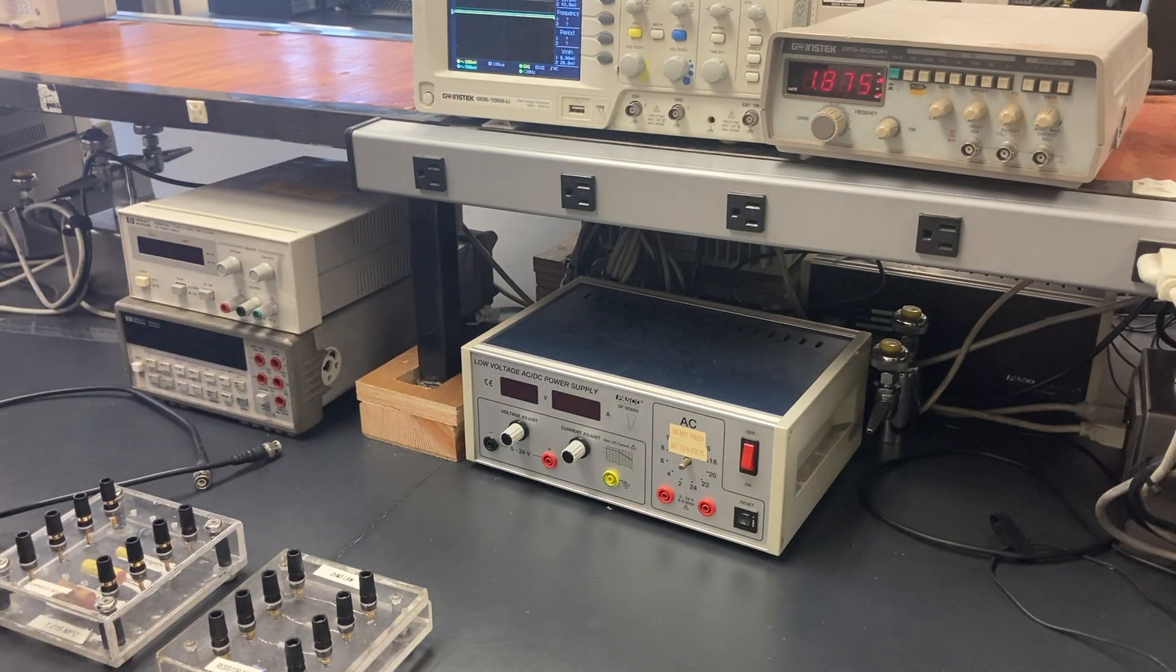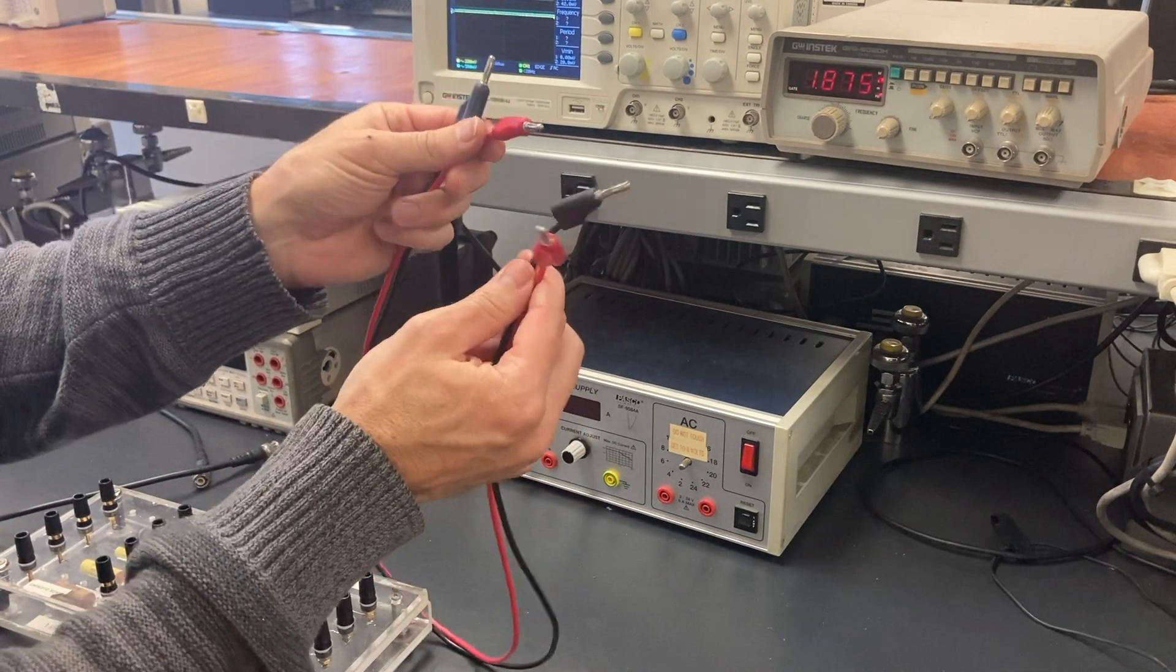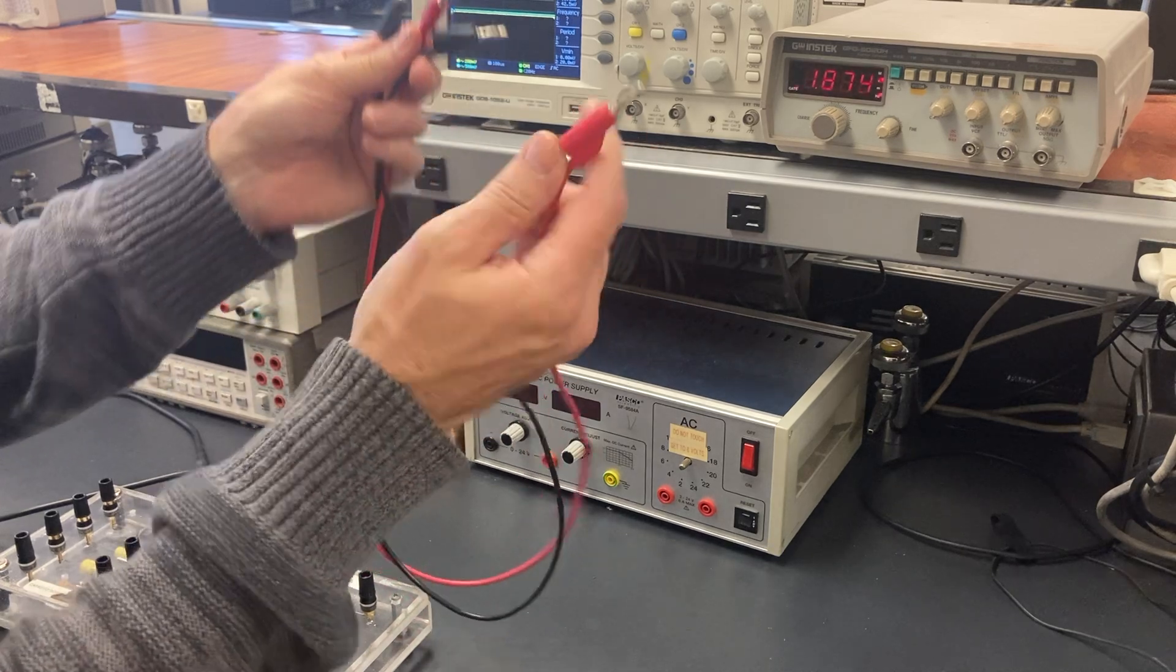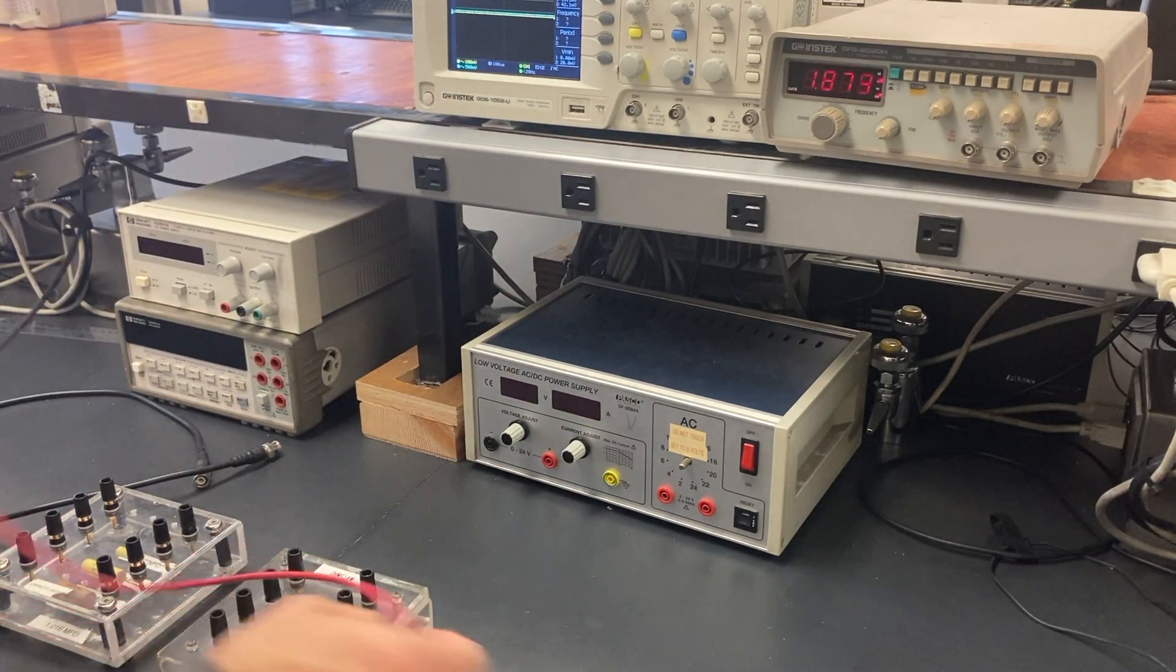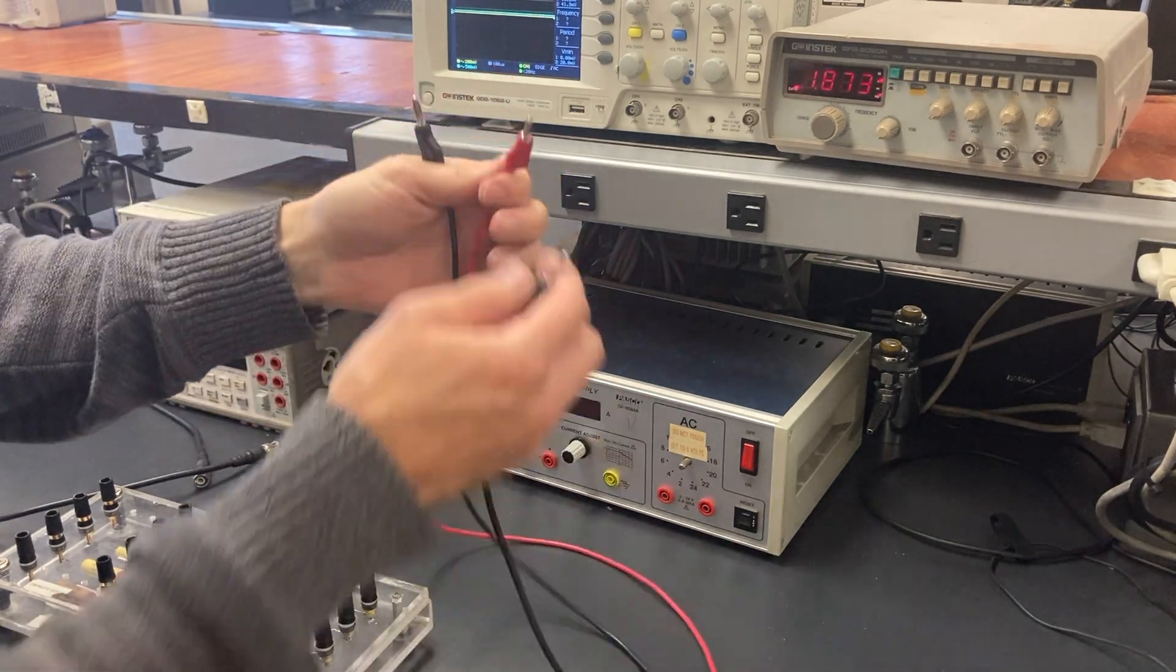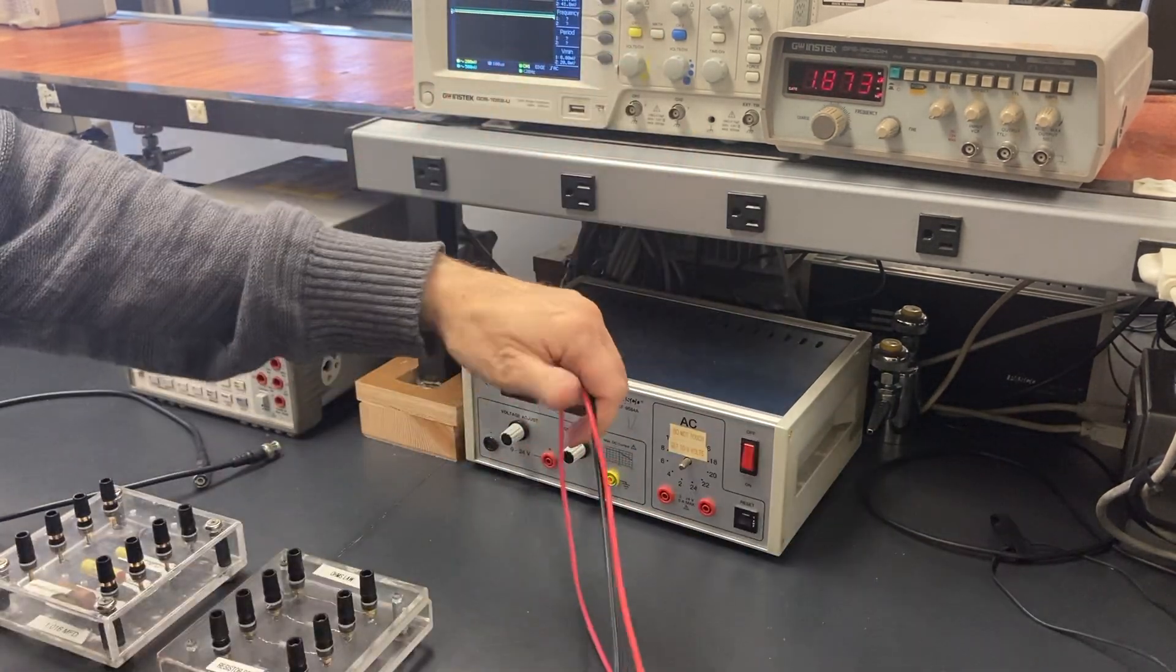Next, for connecting various parts of the circuit, we use these banana plug cables. These plugs on the end just snap into the ports on our circuit, and we'll use those to connect various circuit elements together.